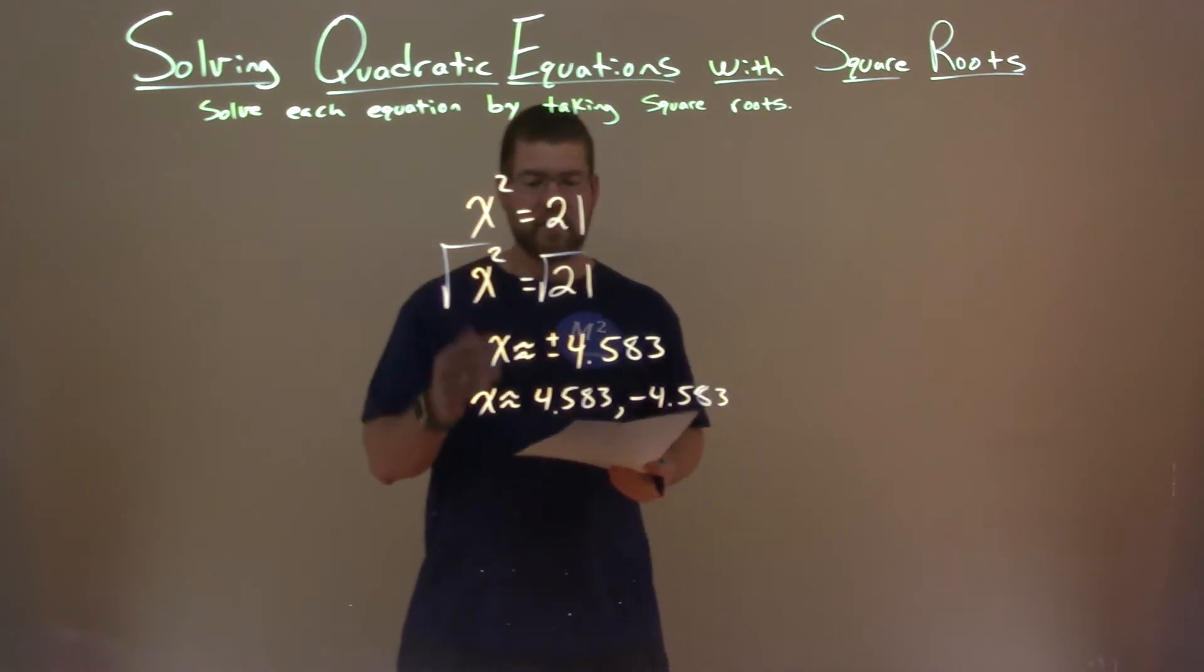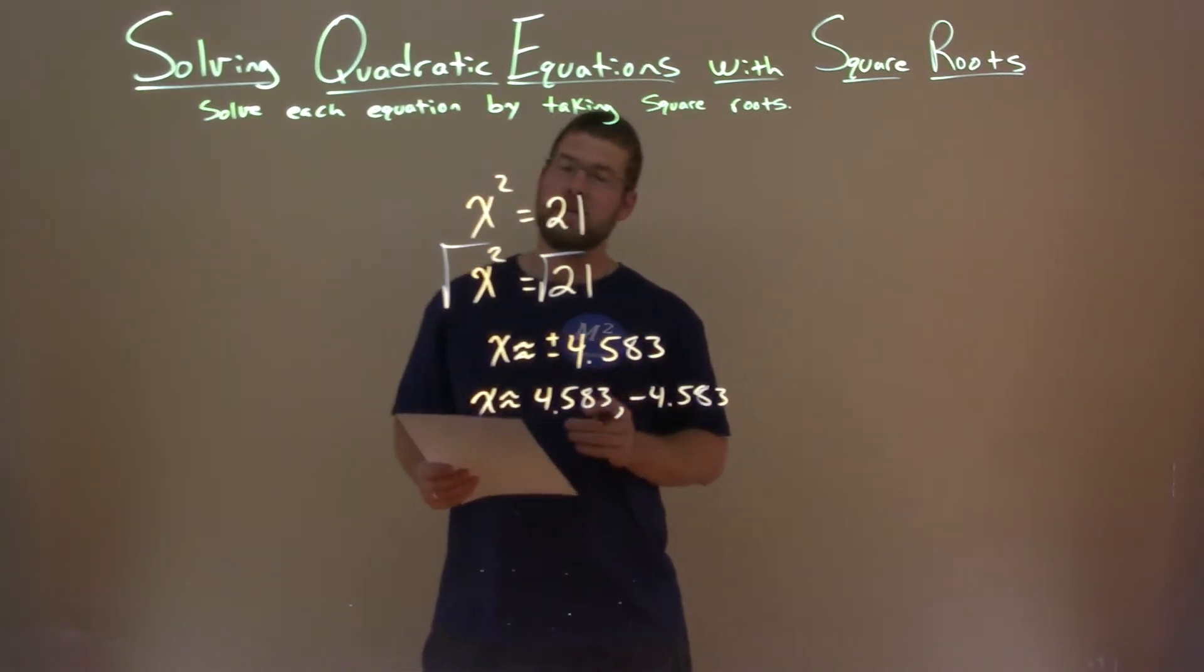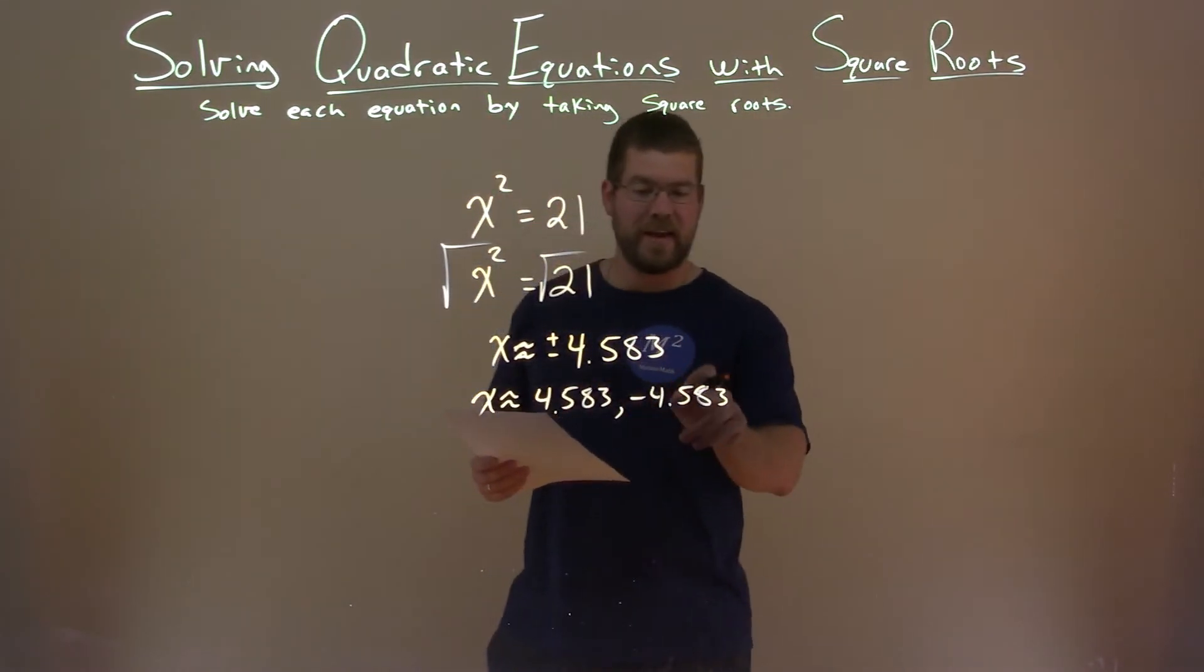So there we have our final answer. x equals a positive 4.583, and a negative 4.583.